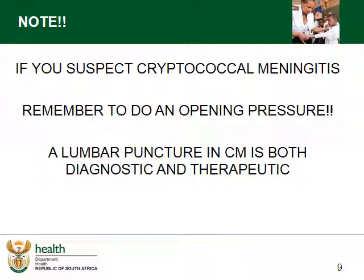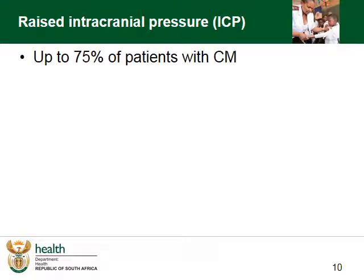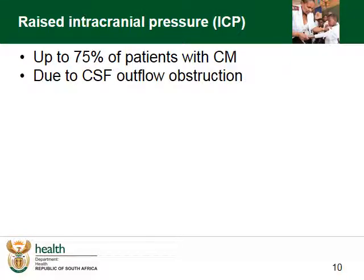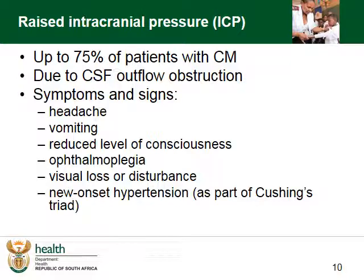A lumbar puncture not only identifies high intracranial pressure but is also therapeutic — it has been shown that managing high intracranial pressure improves prognosis. Up to 75% of patients with cryptococcal meningitis will have increased intracranial pressure, and 15% of patients can develop increased pressure while on treatment even when clearing the infection. A small percentage have persistently raised intracranial pressure and may need a shunt. The increased pressure is caused by CSF outflow obstruction and is the main cause of most classic CM symptoms.